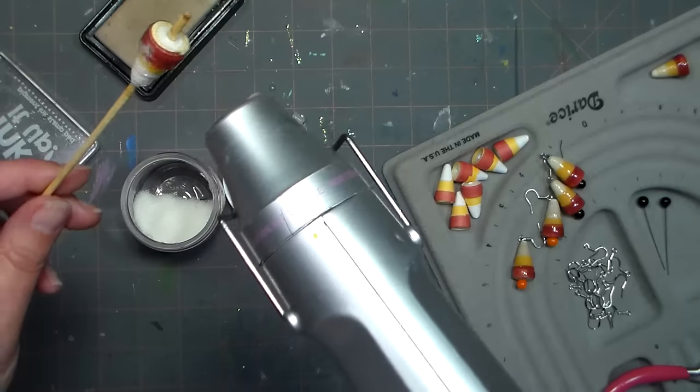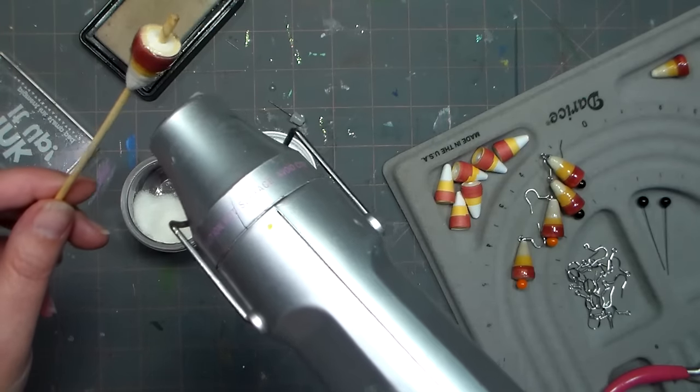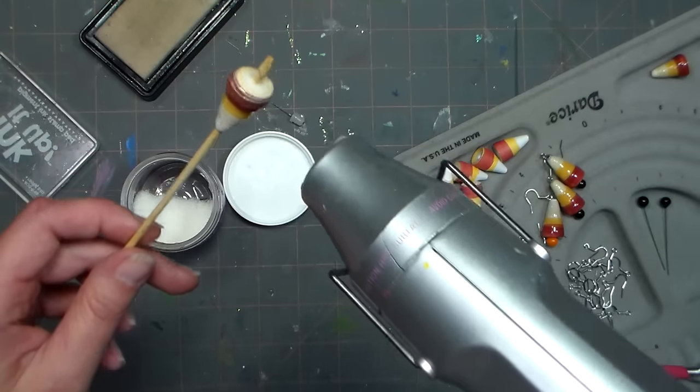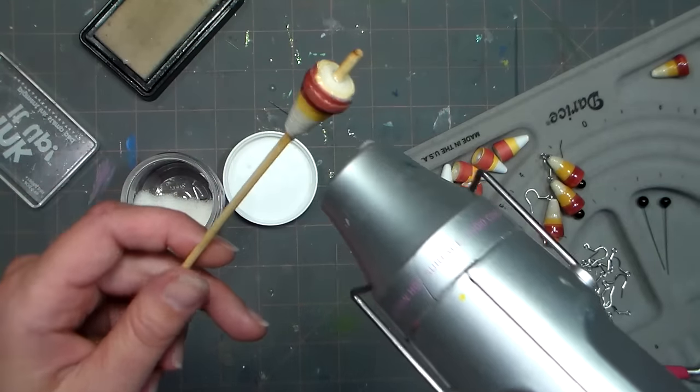So I let my beads dry overnight, and then I go in and do the glazing step. So I noticed a lot of people had problems with that too. Now that it's starting to really melt and get a thick coating, I'm holding it at an angle so it can kind of drip down.